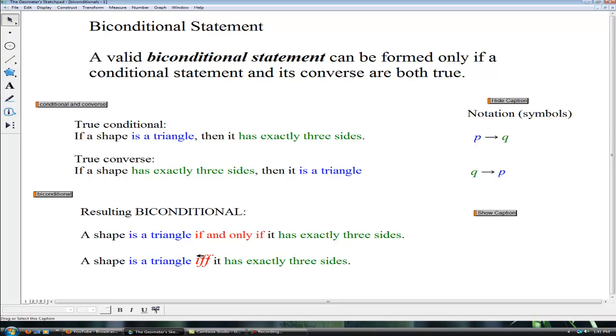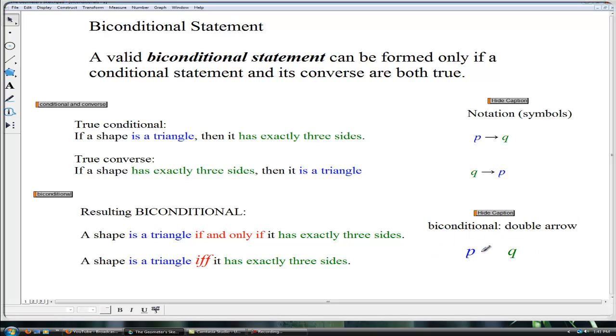There is also a new notation you might see in some textbooks. IFF stands for if and only if. The notation is a double arrow. This notation implies p if and only if q.